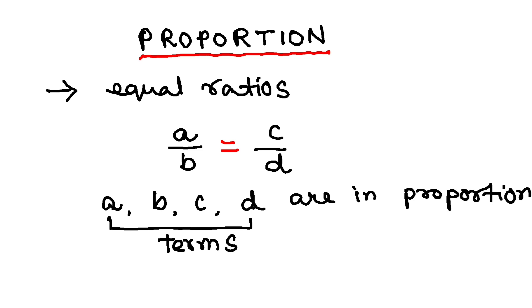So how to write proportion symbolically? You can write A by B equal to C by D, or there is another way: A is to B is proportional to C is to D. So you are going to use double colon to represent proportion.